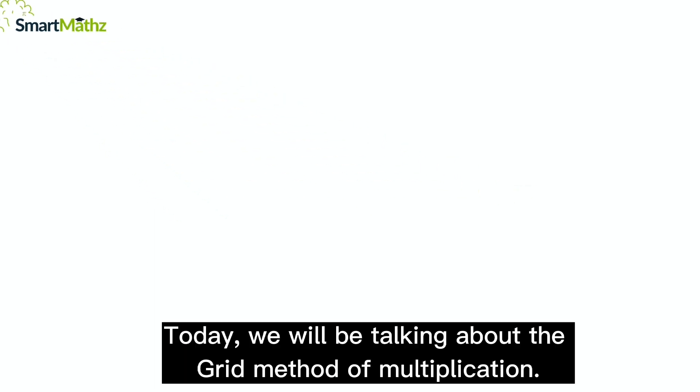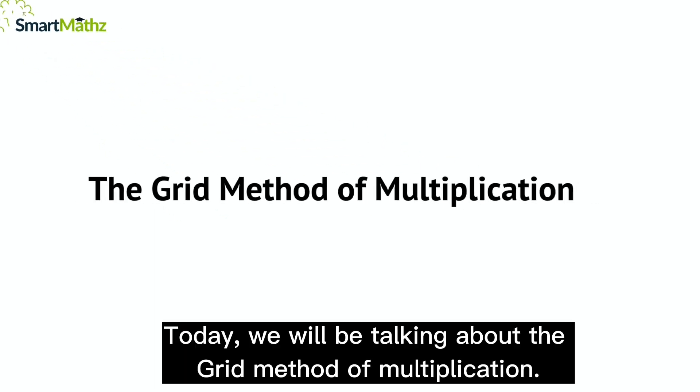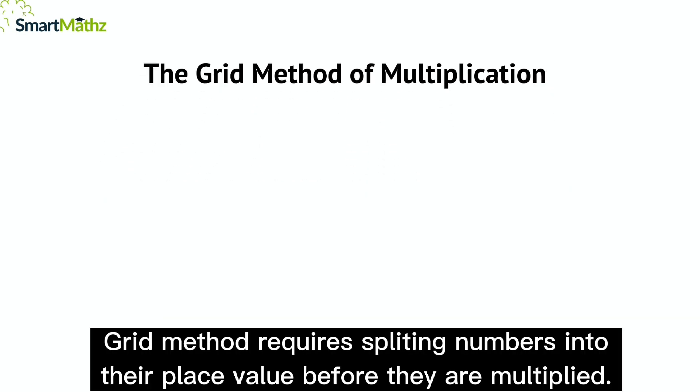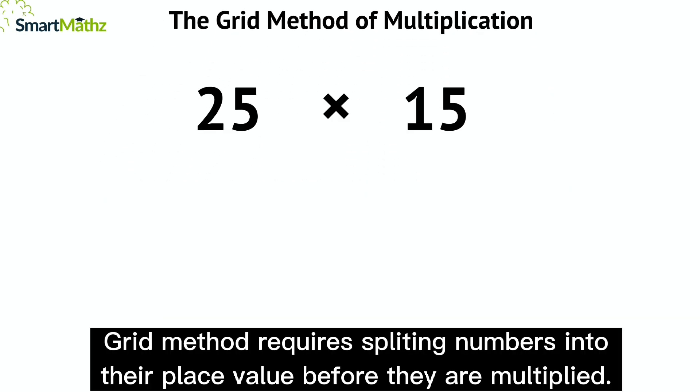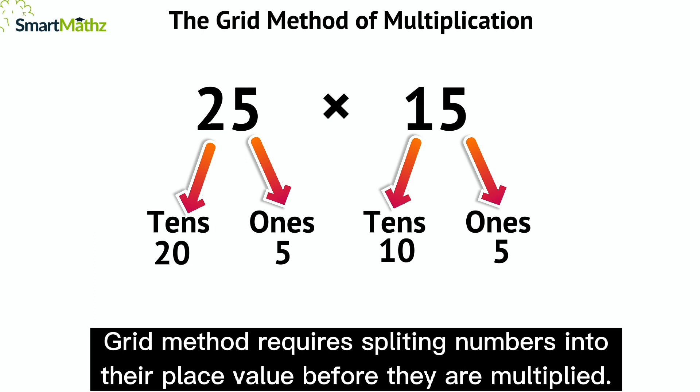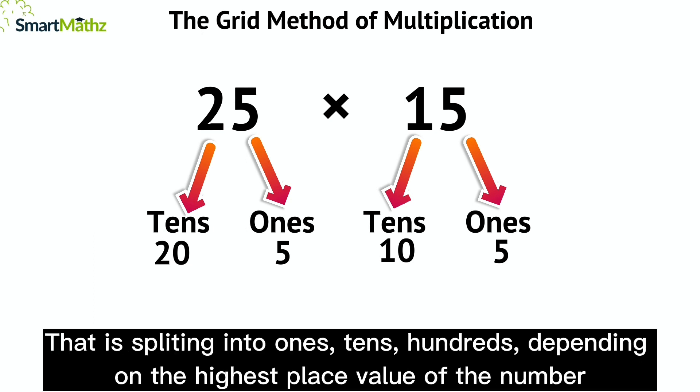Welcome! Today we will be talking about the grid method of multiplication. The grid method requires splitting numbers into their place value before they are multiplied—that is, splitting into ones, tens, hundreds, depending on the highest place value of the number.